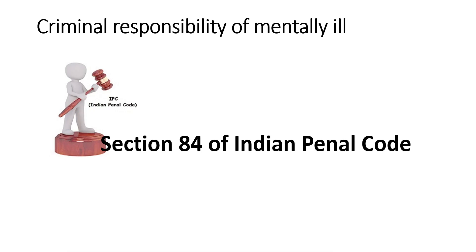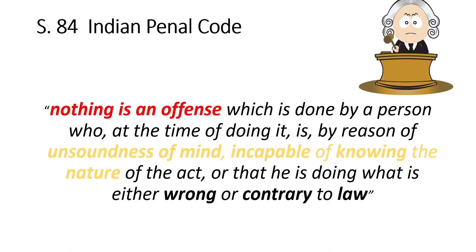Section 84 IPC states that nothing is an offense which is done by a person who, at the time of doing it, is by reason of unsoundness of mind incapable of knowing the nature of the act, or that he is doing what is either wrong or contrary to law. This means that Section 84 of IPC says that any mentally ill person who commits a crime may not be aware of the nature of the act he is doing.